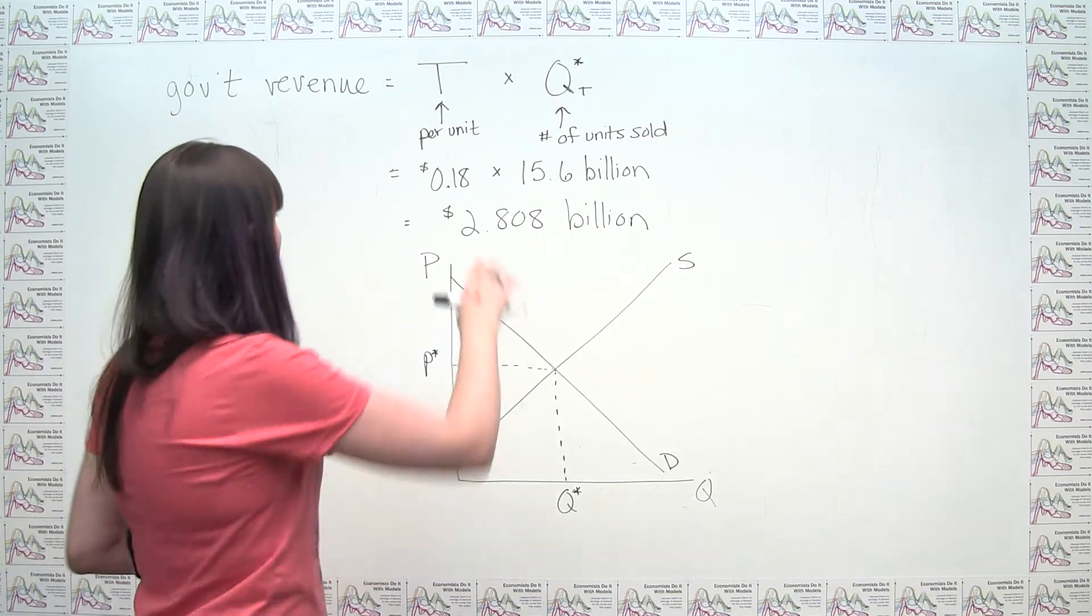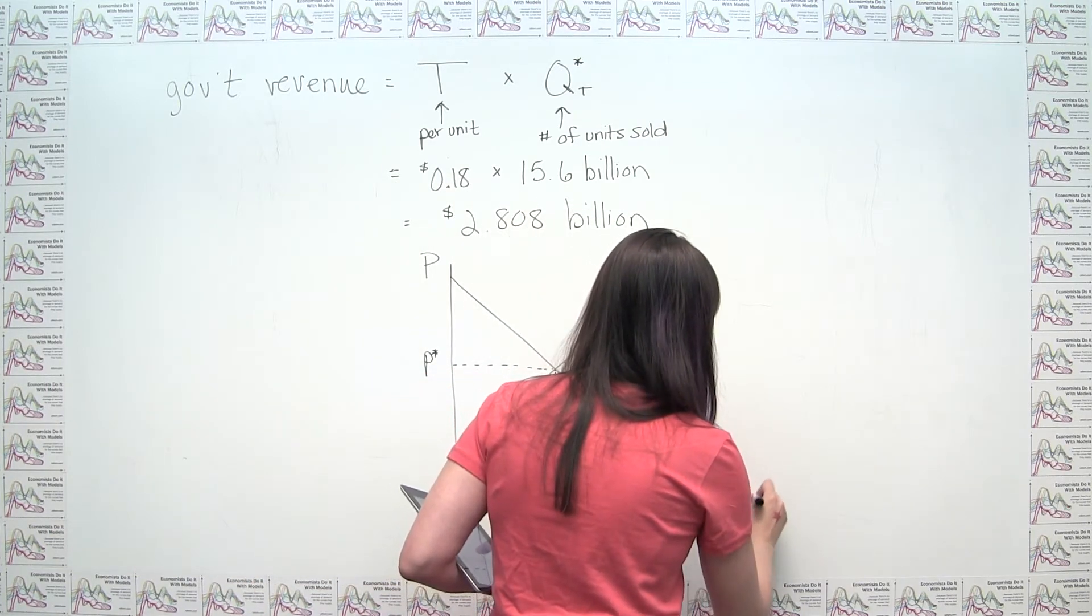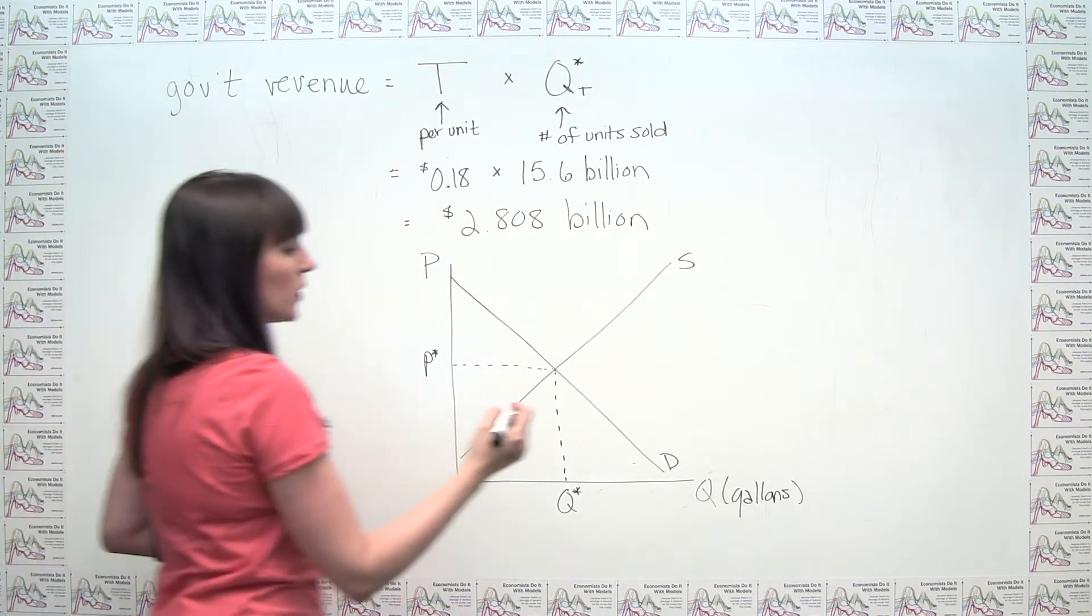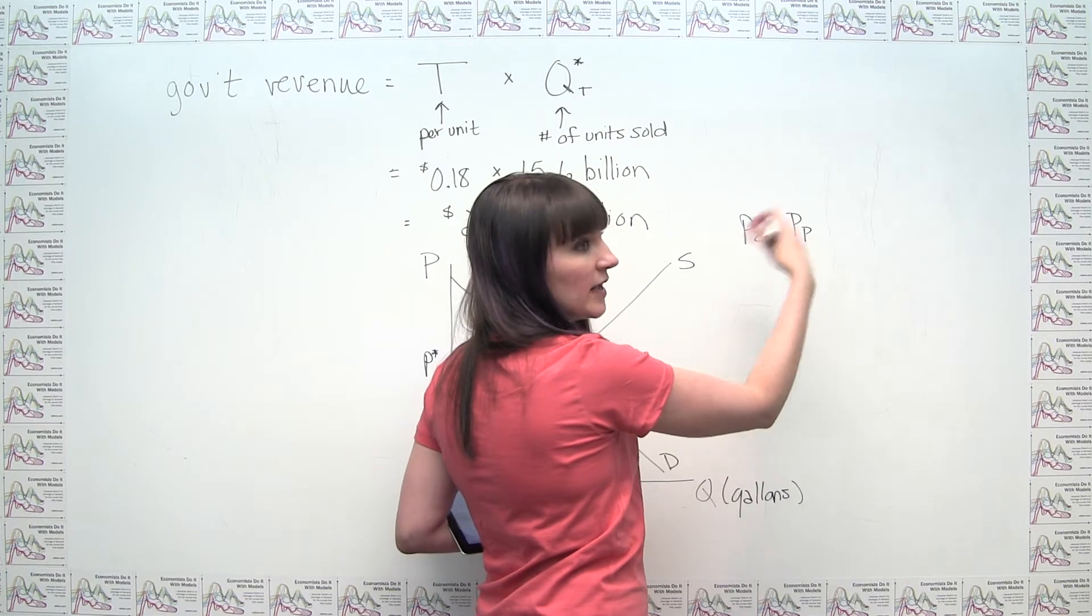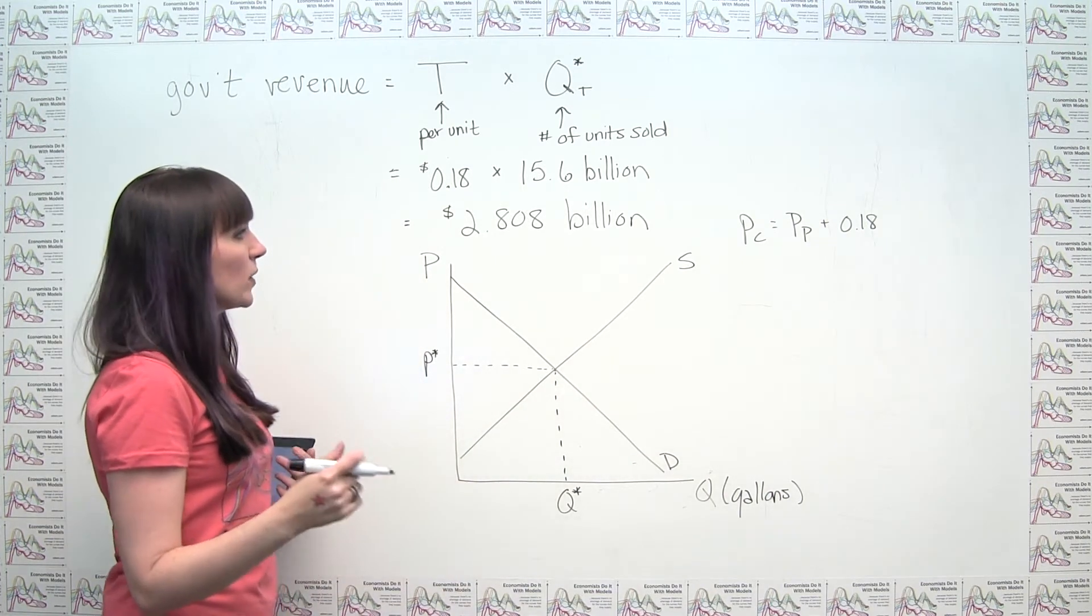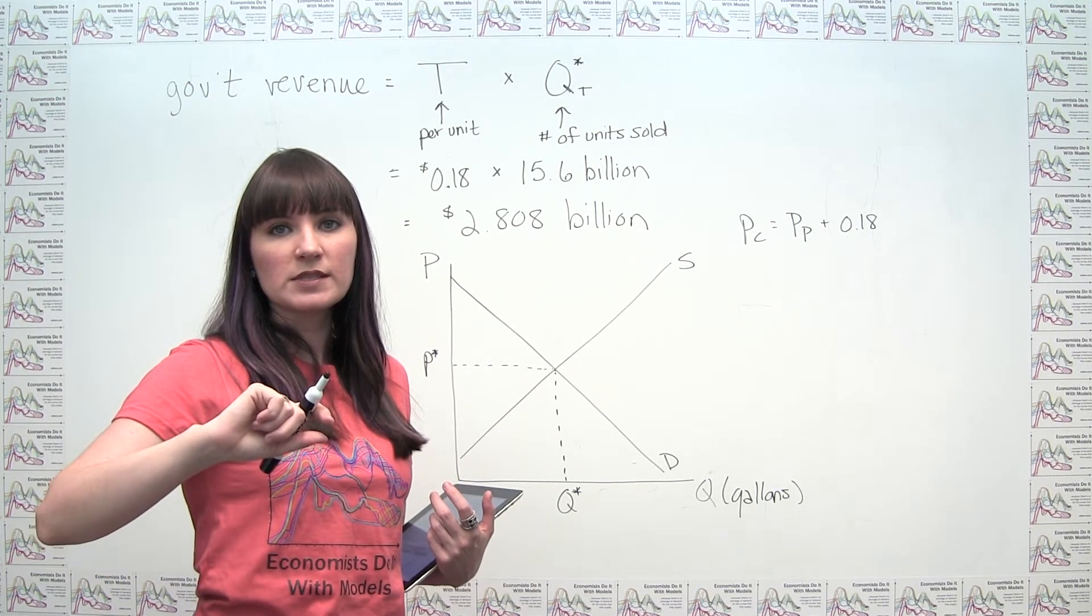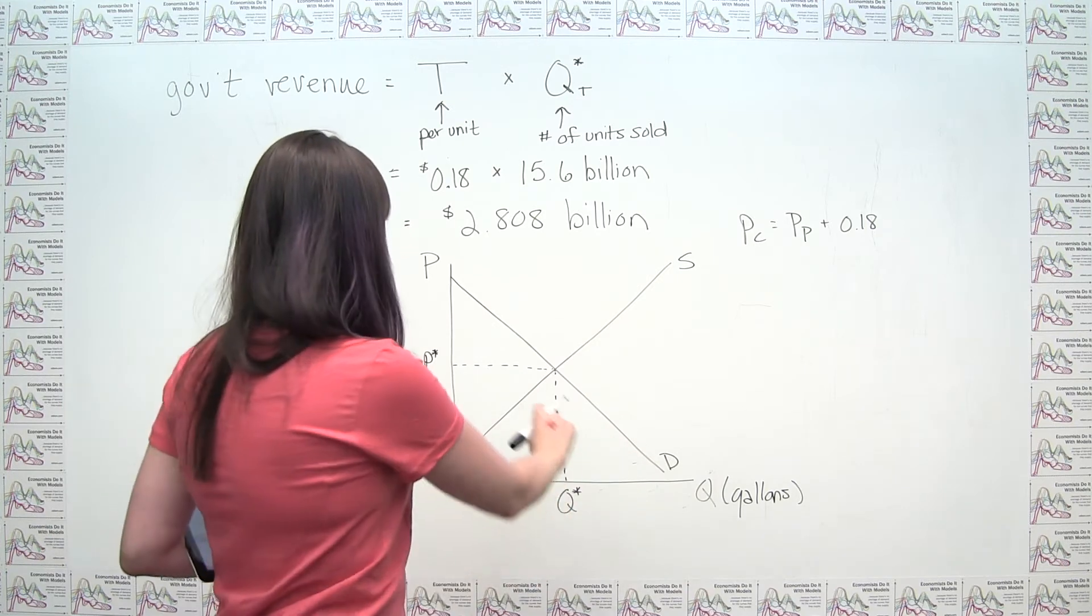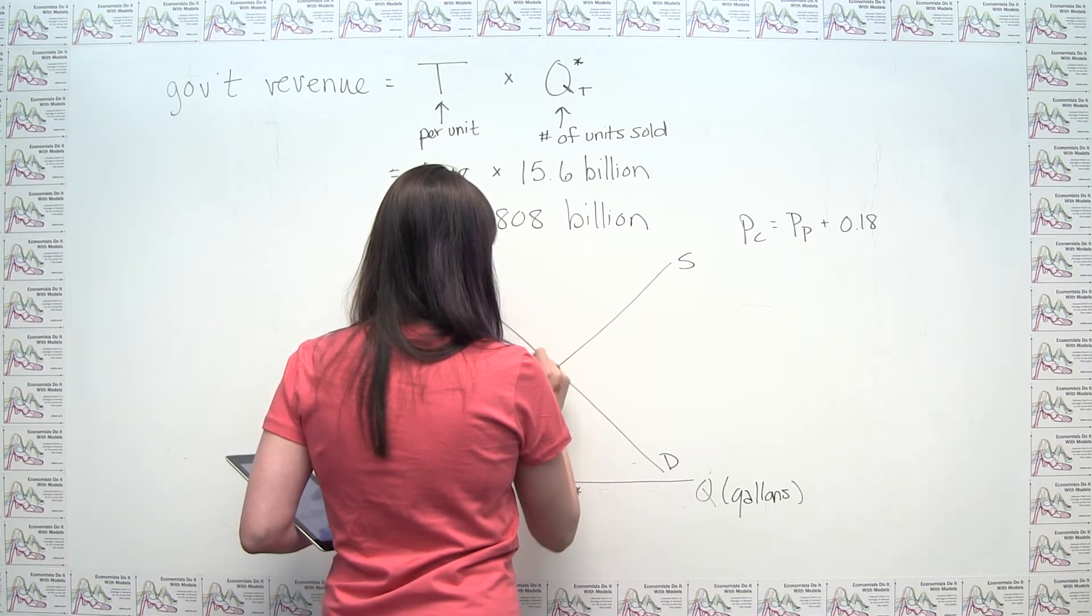We know that when this $0.18 tax per gallon is put in place, because remember this Q is measured in gallons of gasoline, that what we're actually saying is that the price to the consumer is equal to whatever the producer is getting for the gasoline net of the tax, plus the amount of tax, which in this case is $0.18. Or put another way, there's an $0.18 wedge between the price that the consumer pays inclusive of the tax and the price that the producer receives net of the tax. And we notice that we're looking for a quantity where this is true, and that's going to be found somewhere about here. Let's say that this distance here, that this wedge is $0.18.